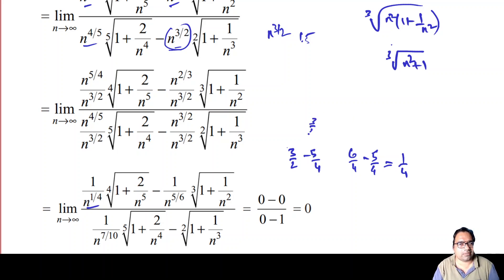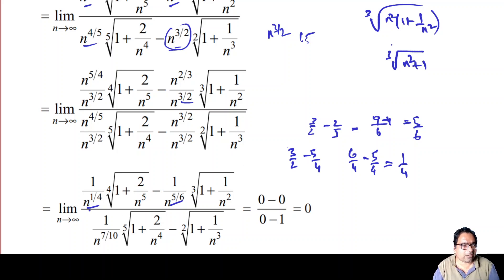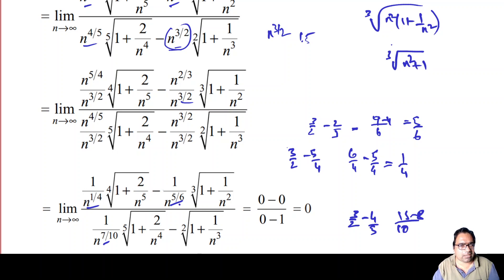Similarly, 3/2 minus 2/3 gives 9/6 minus 4/6 = 5/6, so that term becomes 1/n^(5/6) times the cube root of (1 + 1/n^2). We are getting all n into the denominators so they tend to 0. Also, 3/2 minus 4/5 = 15/10 minus 8/10 = 7/10, giving 1/n^(7/10). And n^(3/2) divided by n^(3/2) is just 1.